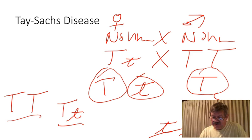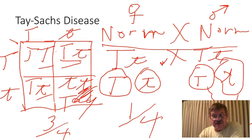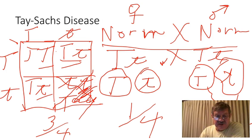One more scenario: say you are about 20 years old and you have a brother who died of Tay-Sachs disease. What is the probability that you are a carrier? It is not 50%, because at age 20 we know you are not the individual with Tay-Sachs. That eliminates one of the four possibilities, leaving three — two of which are carriers. So the probability that you are a carrier is two out of three, or two-thirds. We'll stop here and pick up Huntington's disease in the next video.